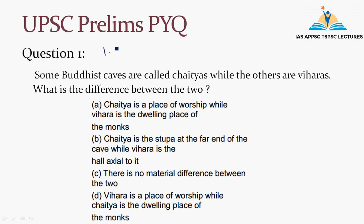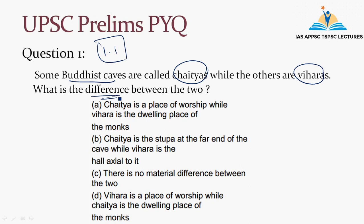Why is section 1.1 important? Let's solve question number 1. Please write your answer in the comment box. The question is: Some Buddhist caves are called Chaityas while the others are Viharas. What is the difference between the two? This is a key question to consider.